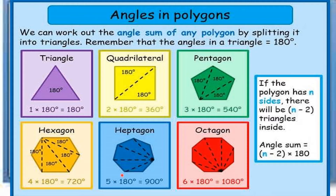For a seven-sided polygon, heptagon, five triangles are formed, so five times 180 degrees equals 900 degrees. For an eight-sided polygon, octagon, six triangles are formed, so six times 180 degrees equals 1080 degrees — the sum of the eight interior angles.